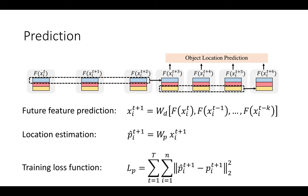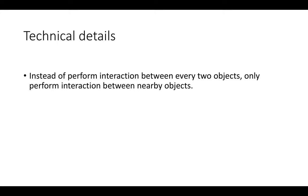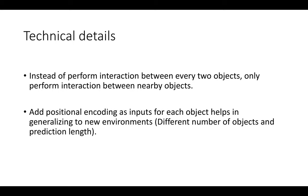Some technical details in training: instead of performing interactions between every two objects, we find that performing interaction only between nearby objects helps generalization. This avoids wasting computation on objects that are far away and whose interactions do not significantly affect prediction. We also find that positional encoding is very useful as input, helping generalization to unseen environments and unseen numbers of objects.